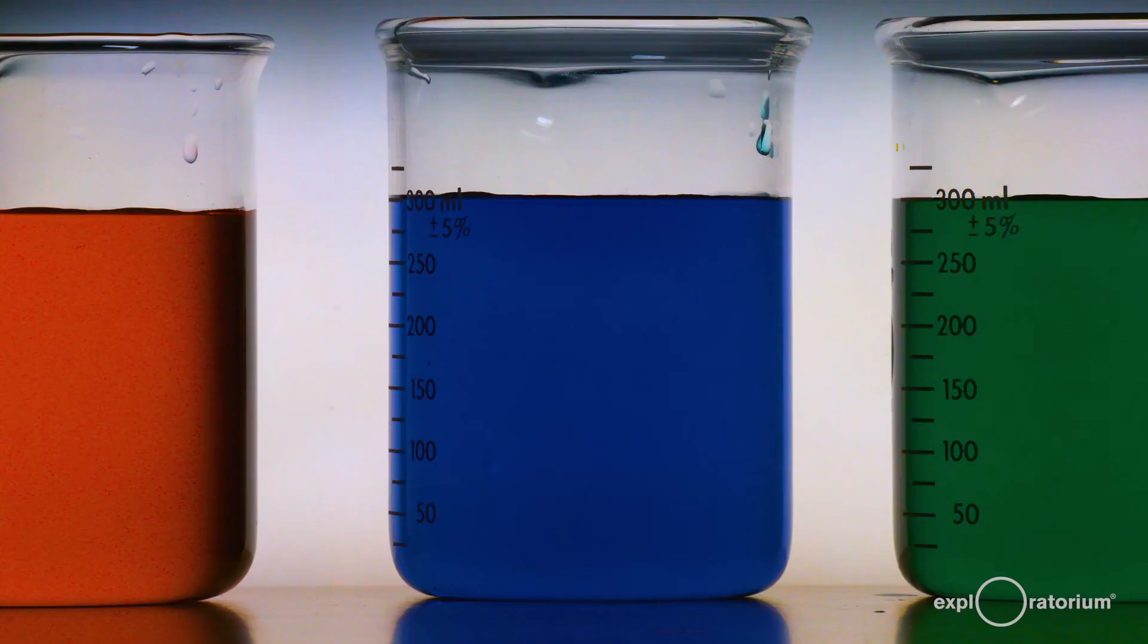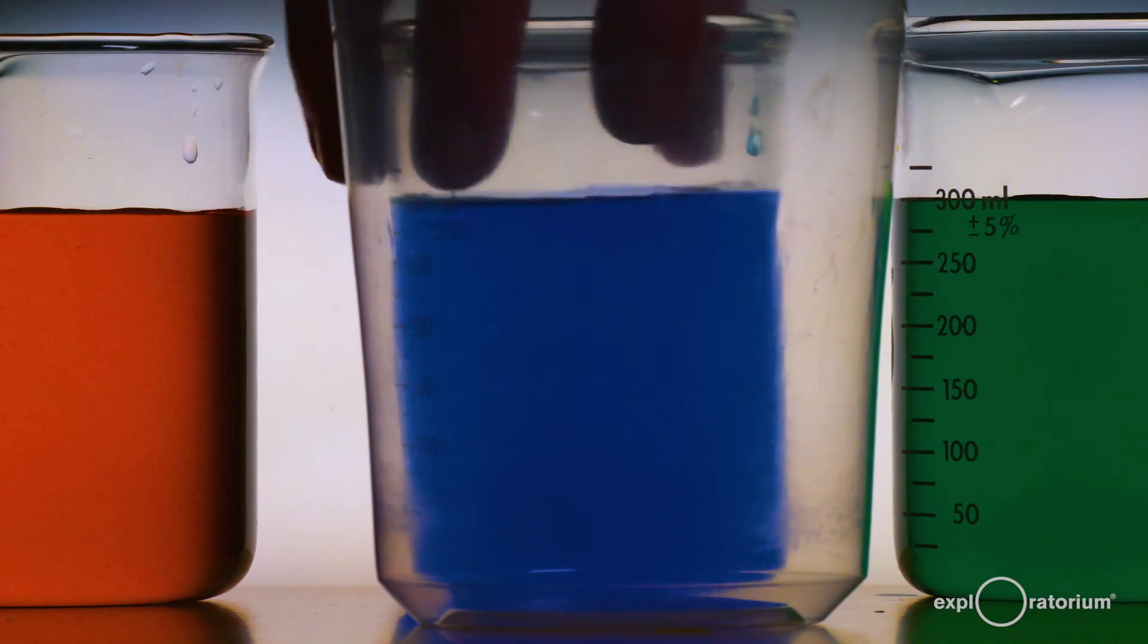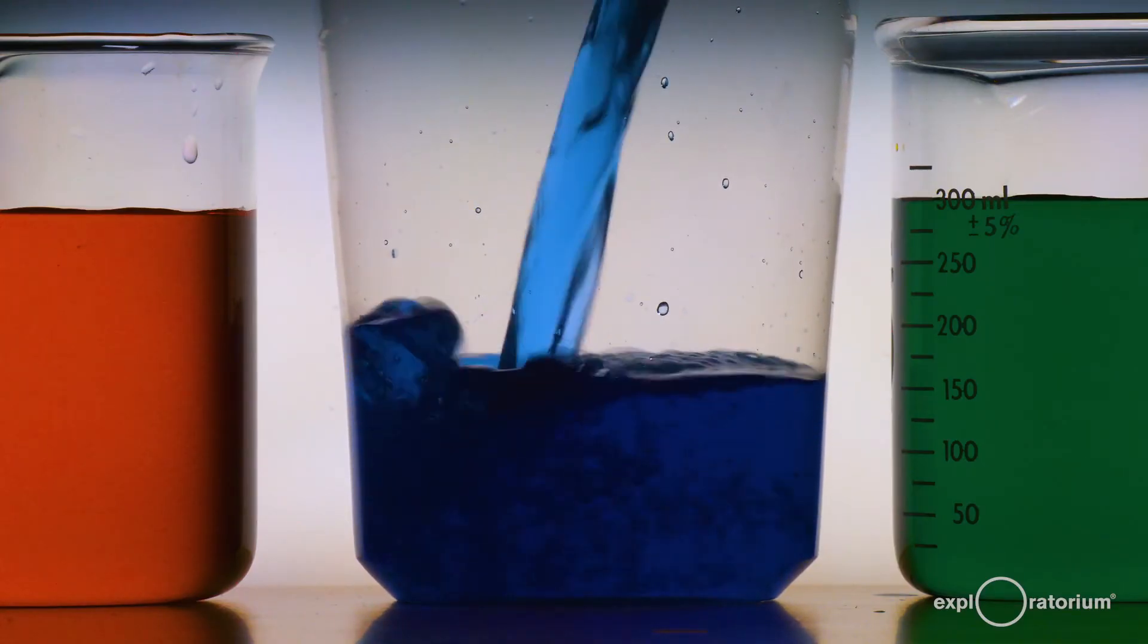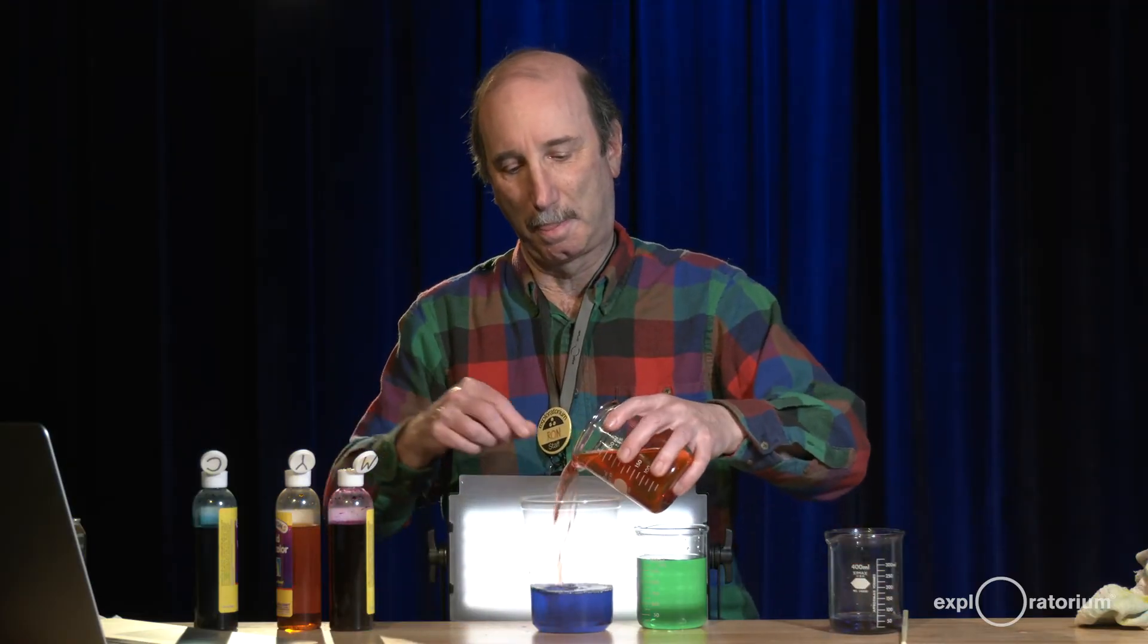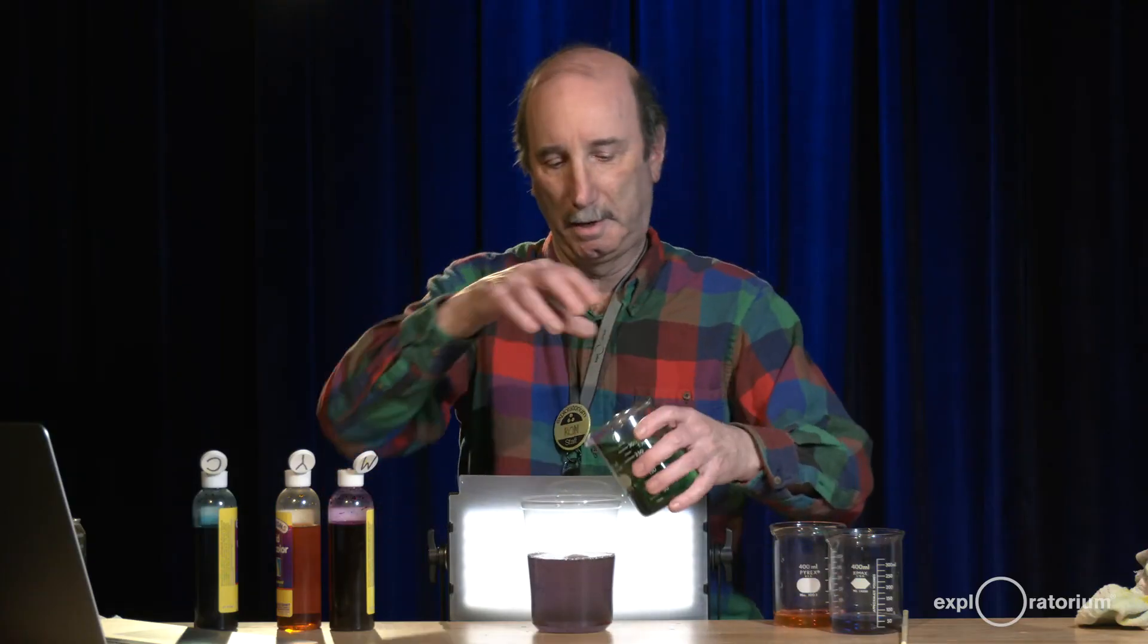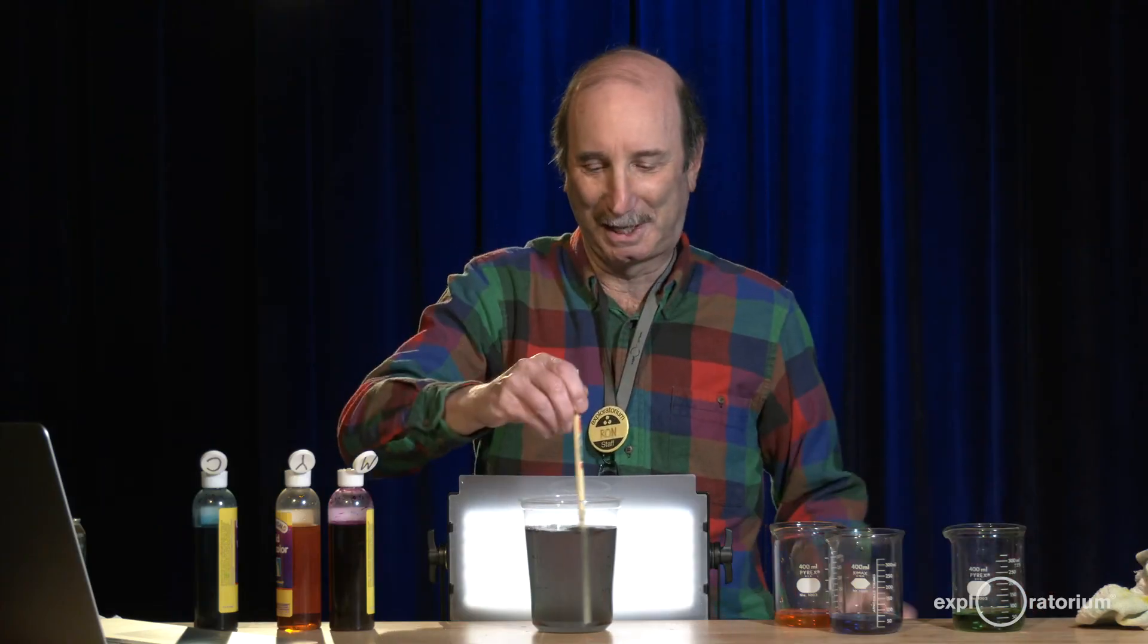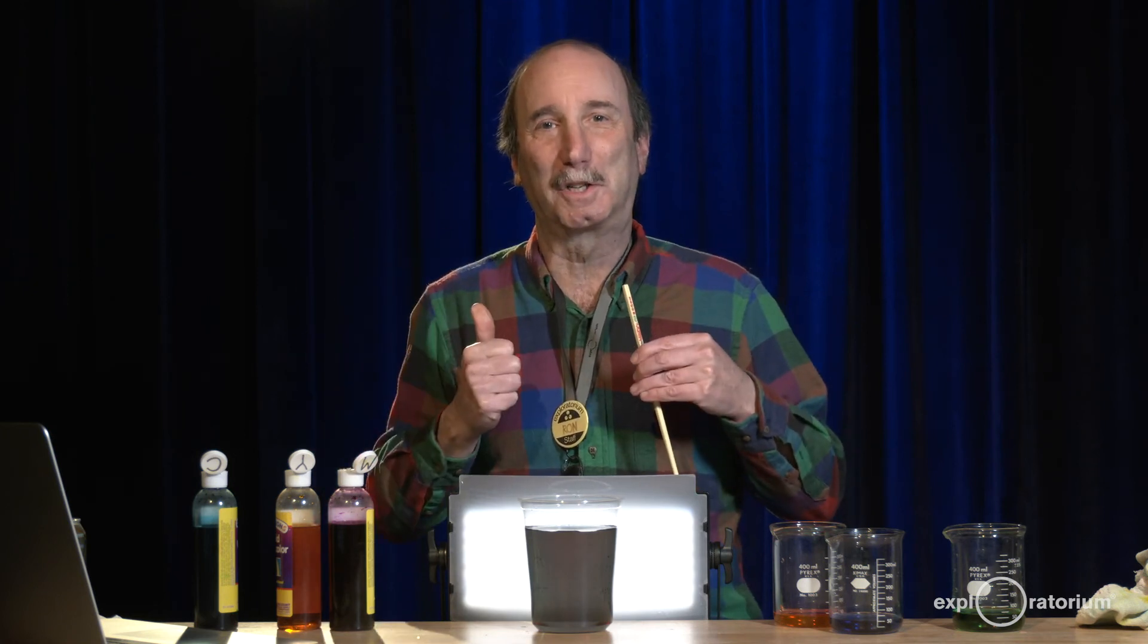What happens if we mix everything together? Let me bring a slightly bigger container in and I'm going to mix together the blue and the red and the green. Stir them all together. And I think you can already see what's happened here. If you take away all the colors, you're left with black. So let's continue with our color talk now.